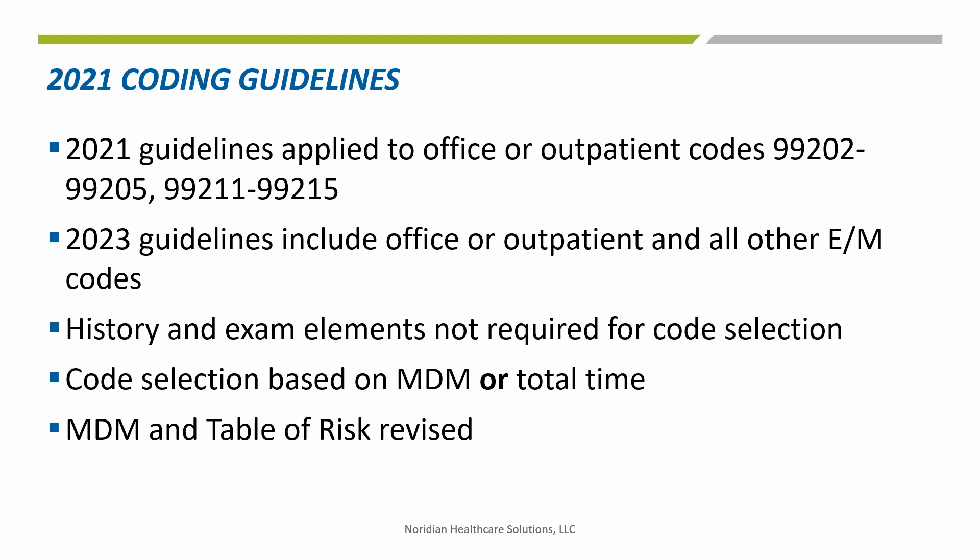History and exam elements are no longer a required element for code selection. However, the documentation for the history and exam are still required. Coding can be based on either medical decision making or time-based, with new times for each E&M code. Time-based now represents total provider time spent on a patient on that date of service. The medical decision making and the table of risk have been revised, including removal of ambiguous terms such as 'mild' and defined previously ambiguous concepts like acute or chronic illness with systemic symptoms.